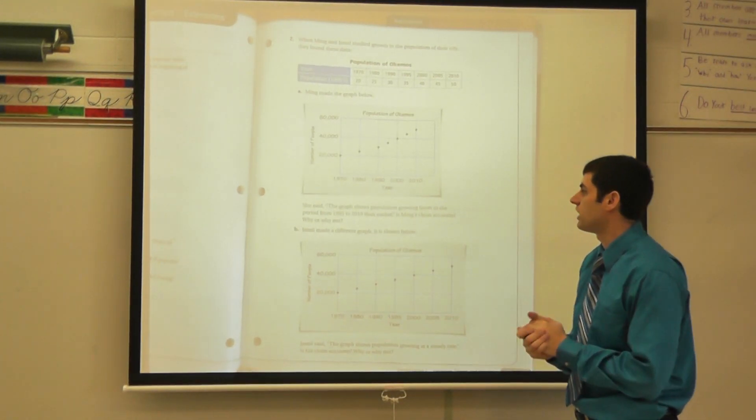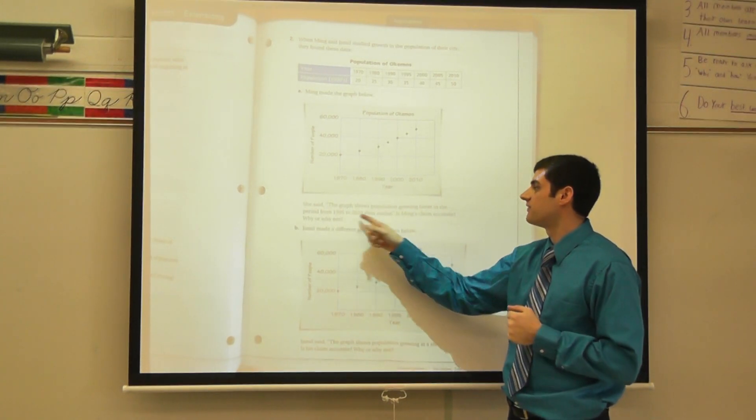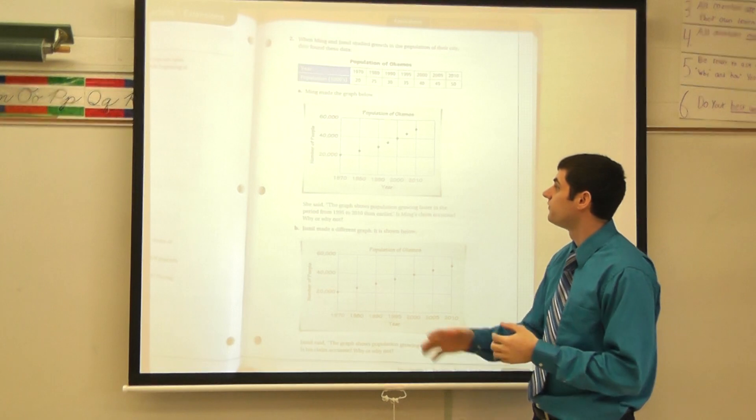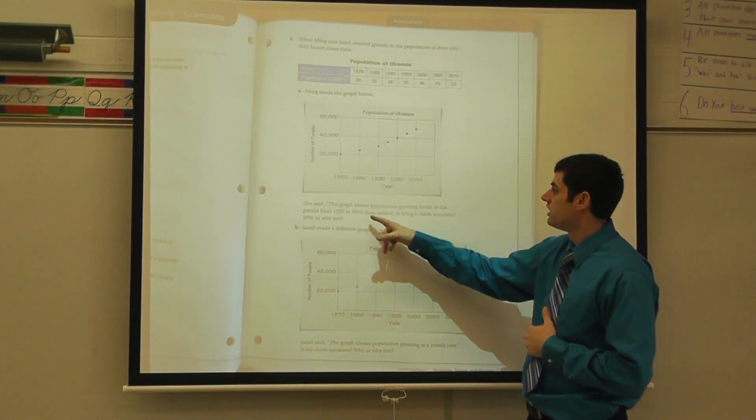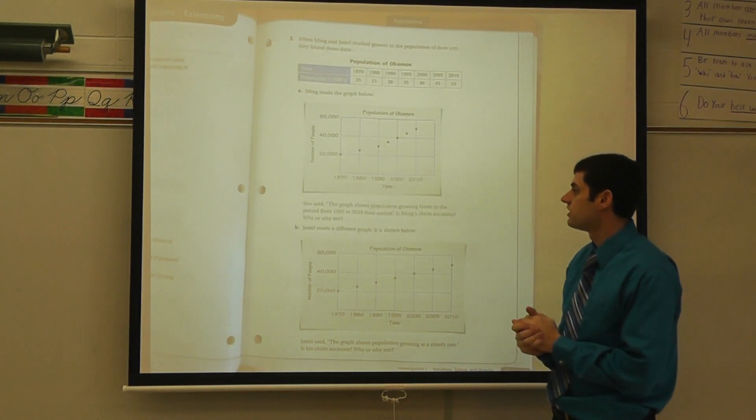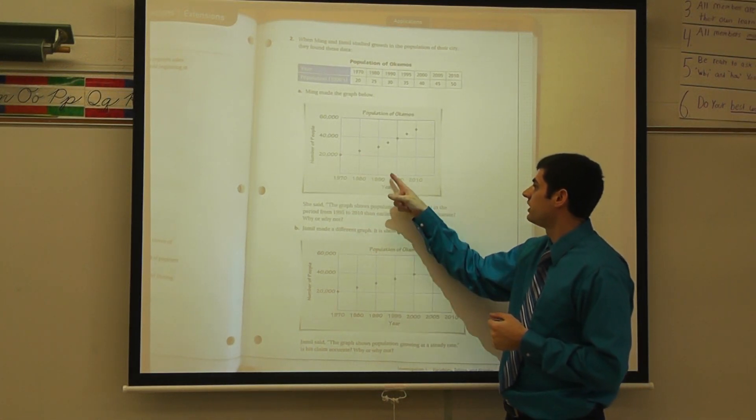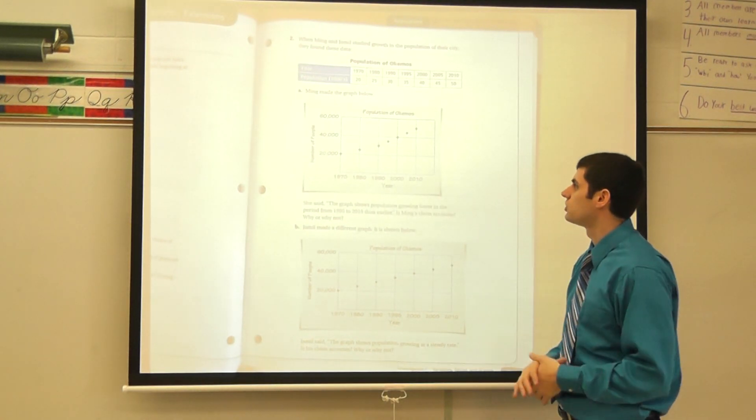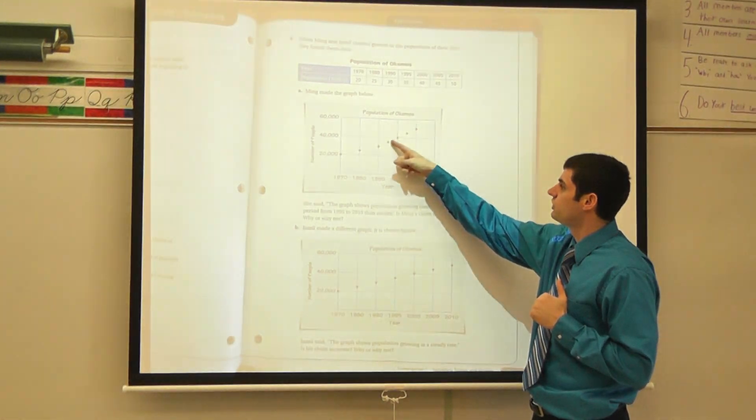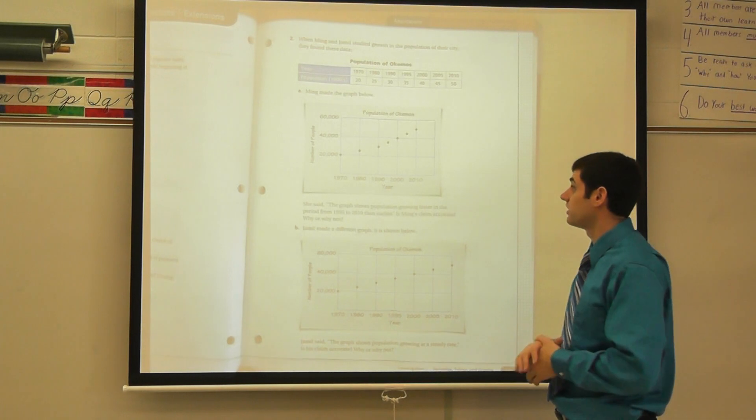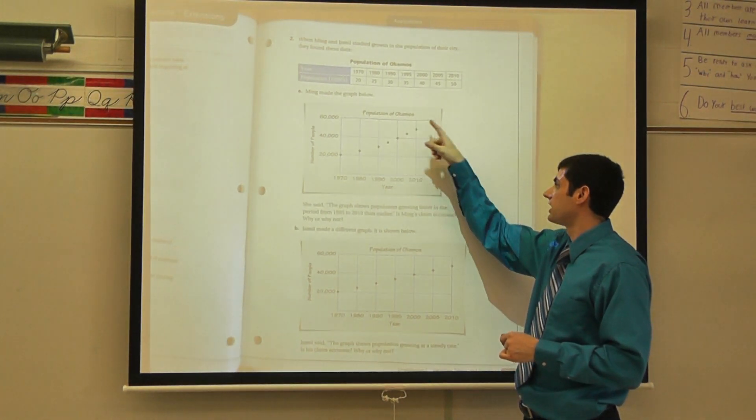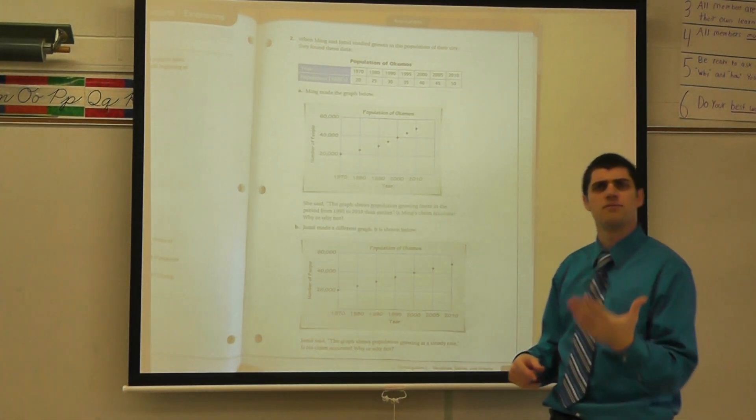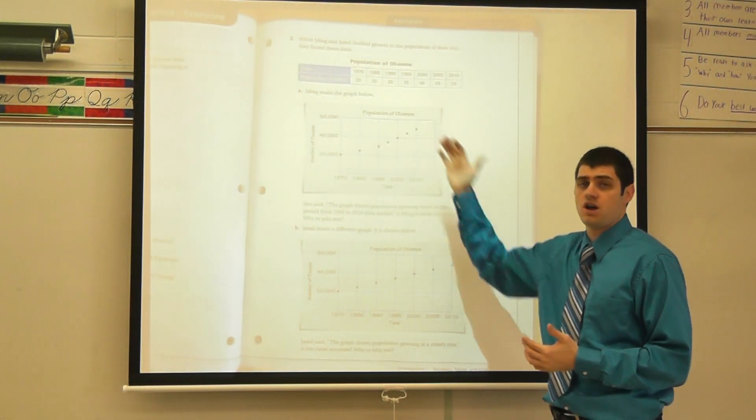She said the graph shows population growing faster in the period from 1995 to 2010 than earlier. Is Ming's claim accurate? Why or why not? So let's analyze her work here. I see they're kind of growing a little bit, but when I look here, it's a stronger growth or a faster growth. Take a look and you can see how it kind of shoots up. So we would know that Ming's claim here is definitely accurate because from 1995 to 2010, it almost doubles in the population. So I would say her claim is correct where we've backed it up with evidence from our chart up here.